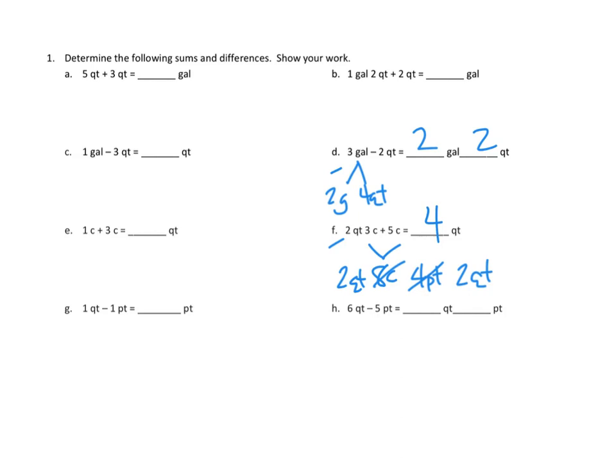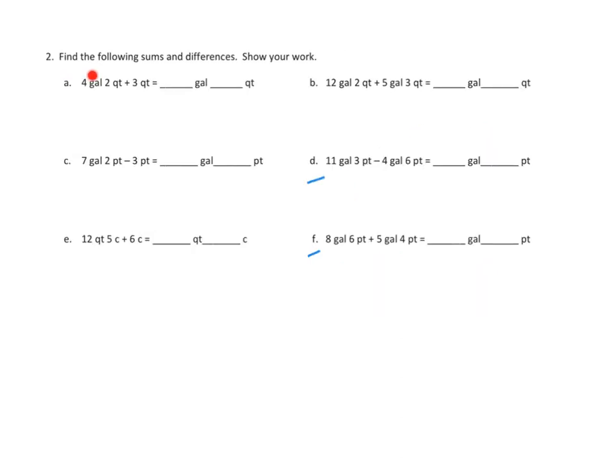All right, let's take a look at a couple more problems. Problem number two asks us to find the following sums and differences and to show our work. I'd like to do problems D and F on the more difficult end of it. Let's take a look at problem D. What if we had eleven gallons, three pints, and we subtracted four gallons, six pints? What would we end up with?